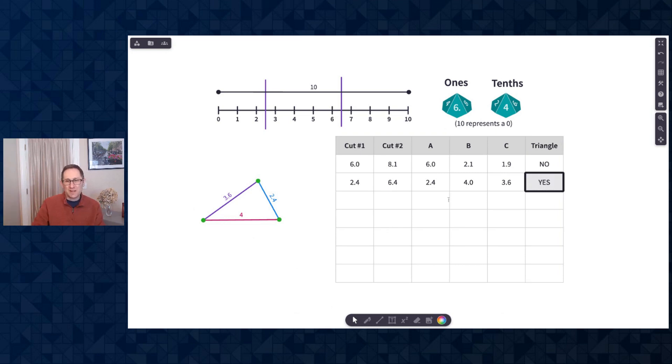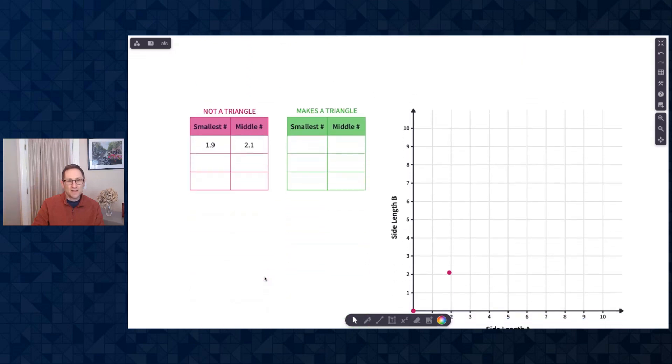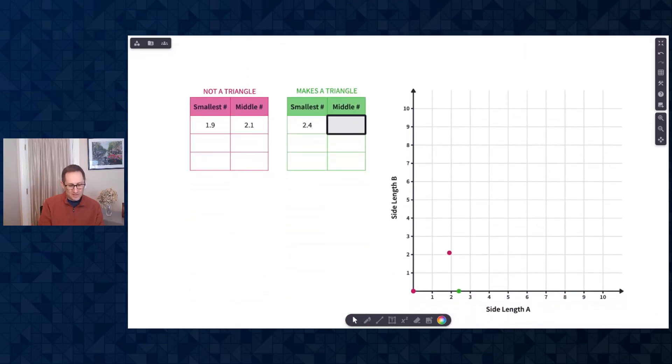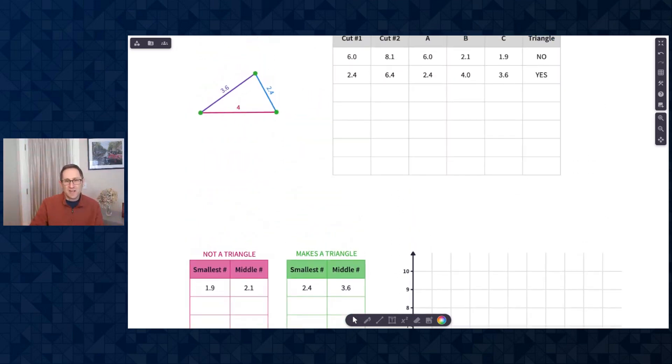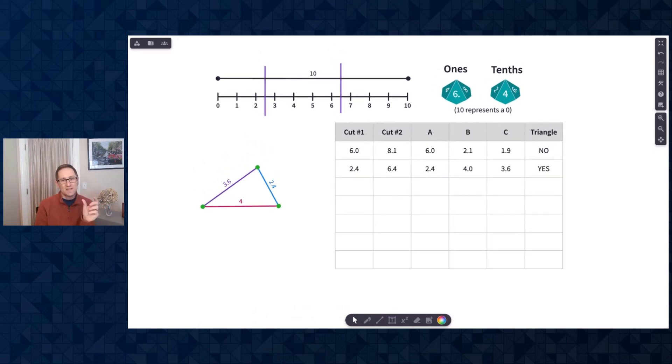So my smallest and middle lengths are 2.4 and 3.6. So I'll go down here, and I'll say 2.4 and then 3.6. And then students would go off on their own, and hopefully get lots of data points. I'm then going to share a Google Sheet with the class, one tab where they work and one tab where they don't work, and students will enter their data into a Google Sheet. I'll show you why in a second.